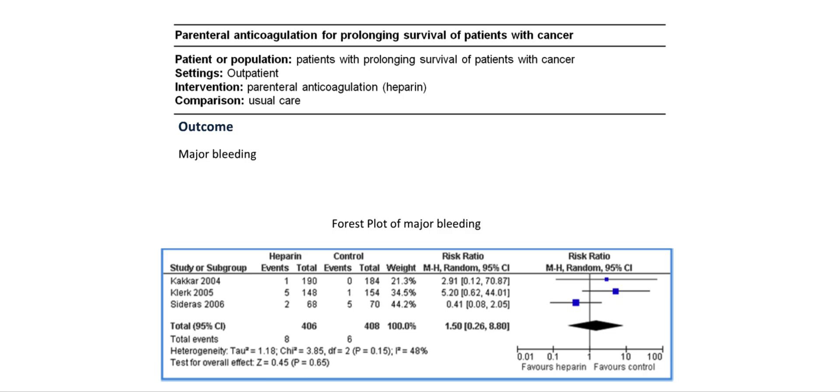Consider this example. It comes from a review on the use of parenteral blood thinners such as heparin and its impact on outcomes in patients with cancer. The meta-analysis and forest plot you see in front of you basically deals with the impact on adverse events such as major bleeding and in particular whether the major bleeding is increased in patients who receive heparin. Consider the forest plot. How would you interpret this forest plot? What would you consider when deciding whether you are confident in the results of this meta-analysis and whether heparin increases the risk of major bleeding?